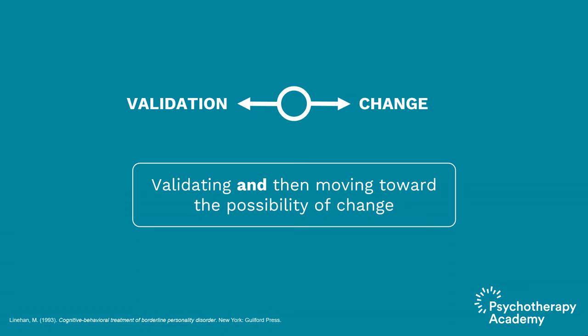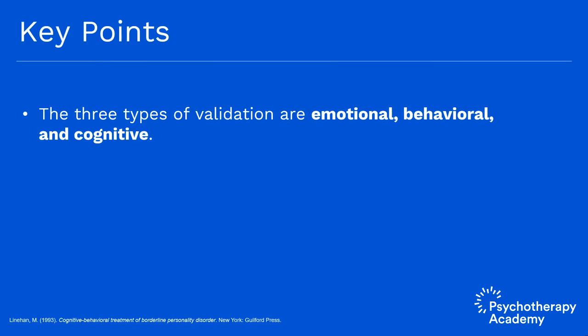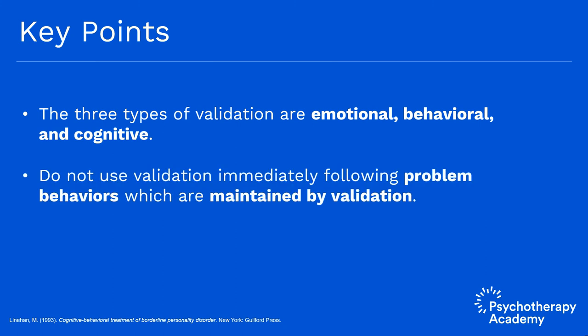In the next video, I'll discuss the six levels of validation — in theory, it's possible to validate anything at one of these six levels. Key points: the three types of validation are emotional, behavioral, and cognitive. Do not use validation immediately following problem behaviors which are maintained by validation.